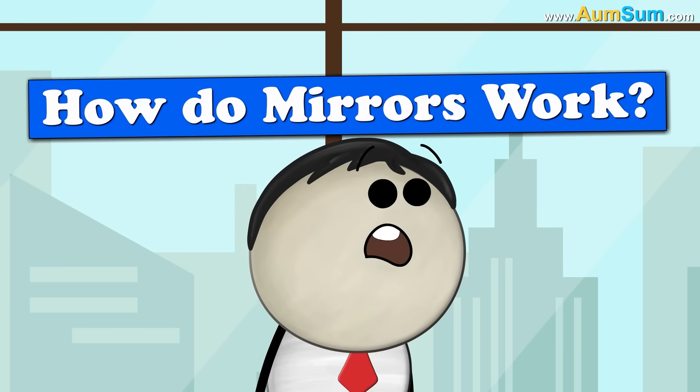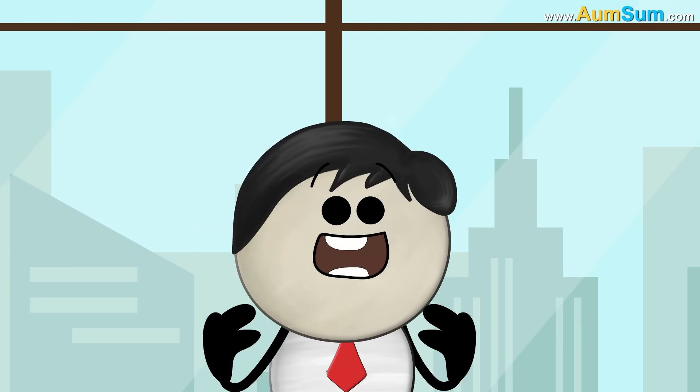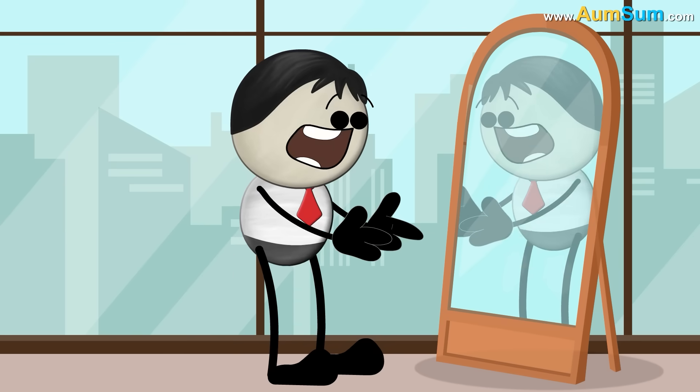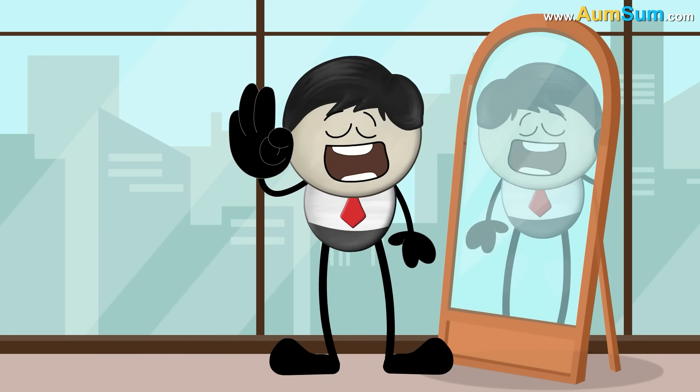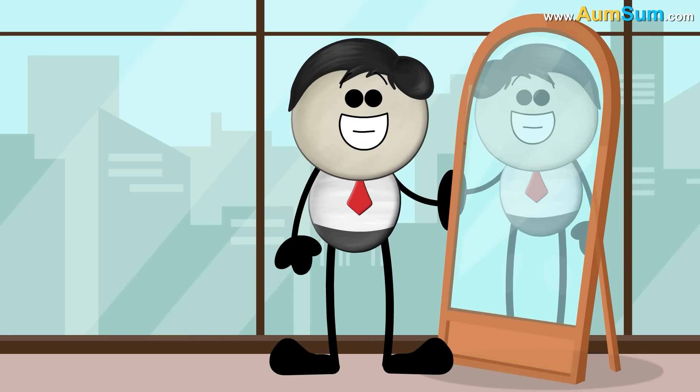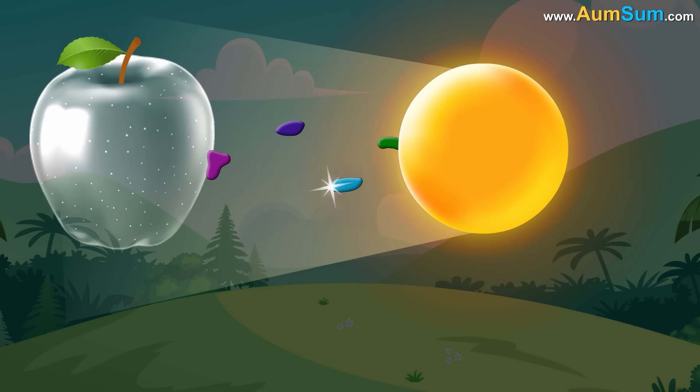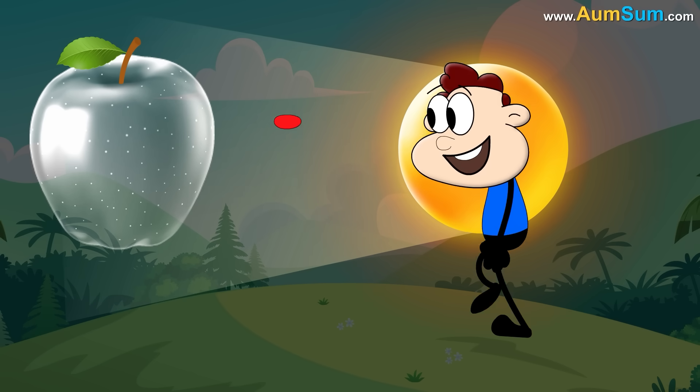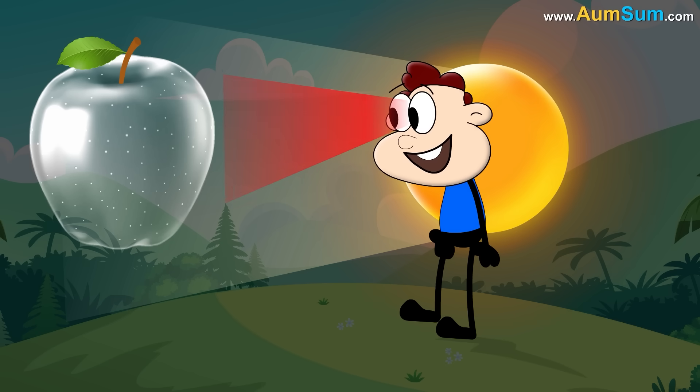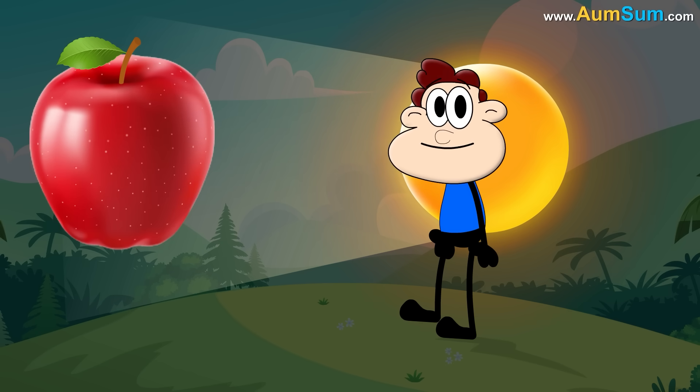How do mirrors work? Simple. They work because AumSum is so handsome. See, when light hits an apple, it absorbs all the colors of light except for red. Red is reflected back. Hence, the apple appears red.